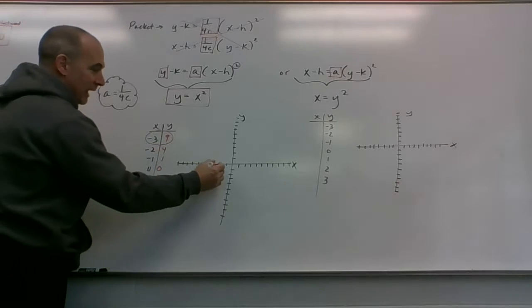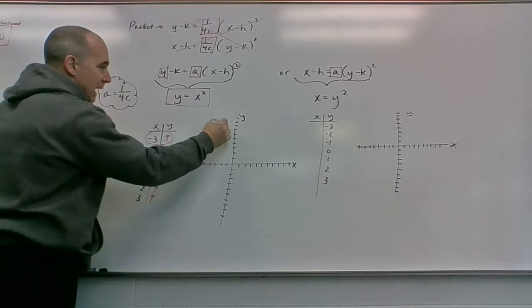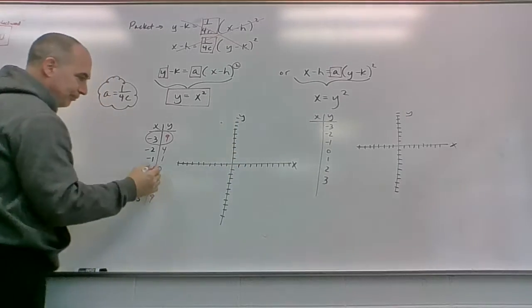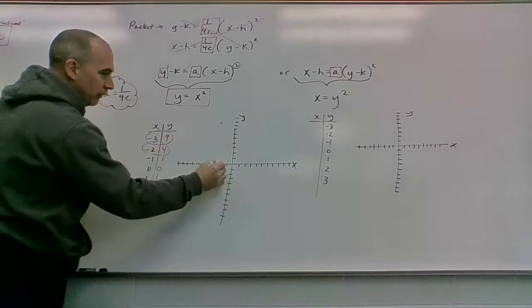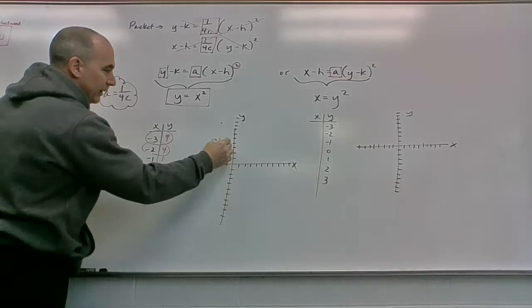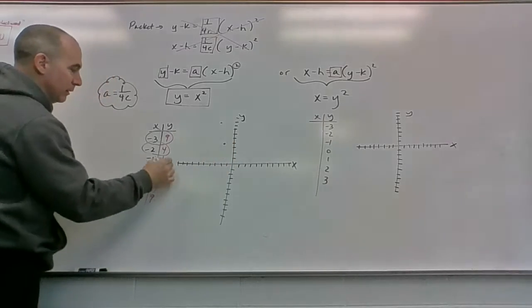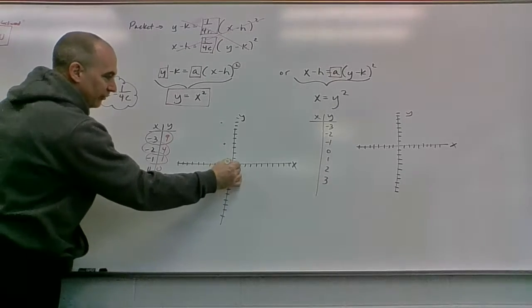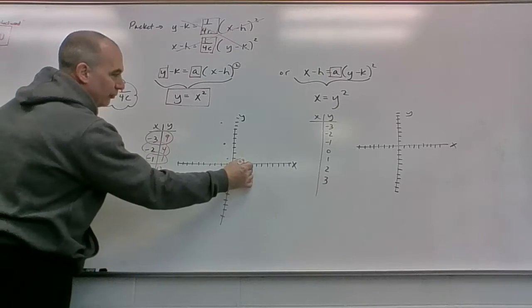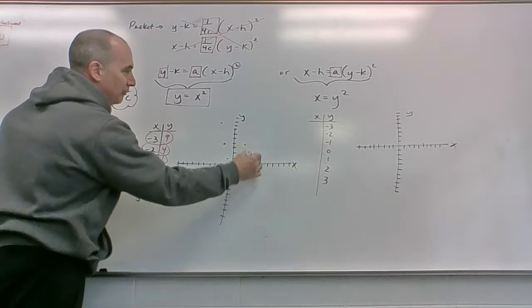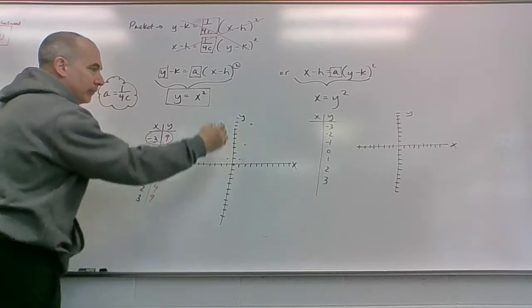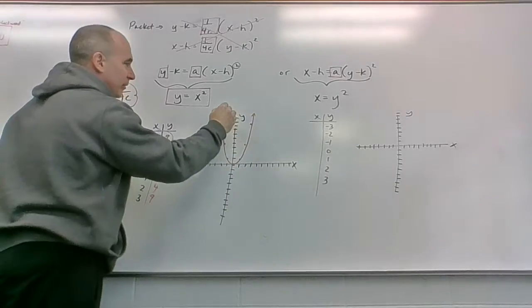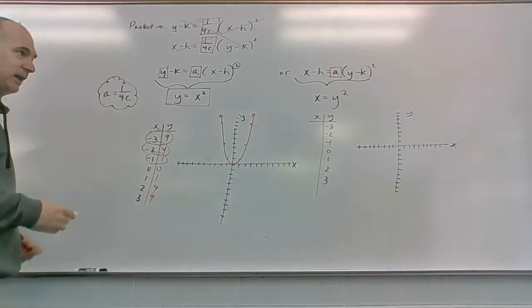So what's negative 3 squared? 9. What's negative 2 squared? 4. What's negative 1 squared? 1. What's 0 squared? 0. What's 1 squared? 1. What's 2 squared? 4. What's 3 squared? 9. These are a whole bunch of points. Negative 3, 9, 1, 2, 3, 9. I hope that's 9. 1, 2, 3, 4, 5, 6, 7, 8, 9. Yep. Negative 2, 4. Be right here. Negative 1, 1. Be right there. 0, 0 there. 1, 1 there. 2, 4 there. 3, 9 there. And there's an infinite number of points, but I want you to notice it makes a parabola. It just does.